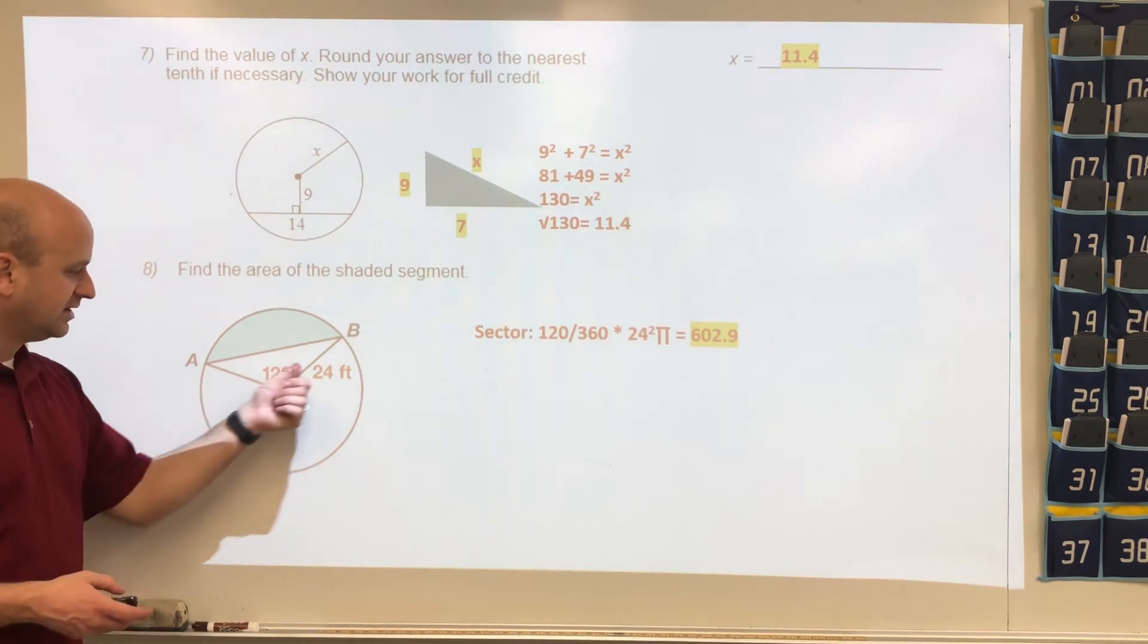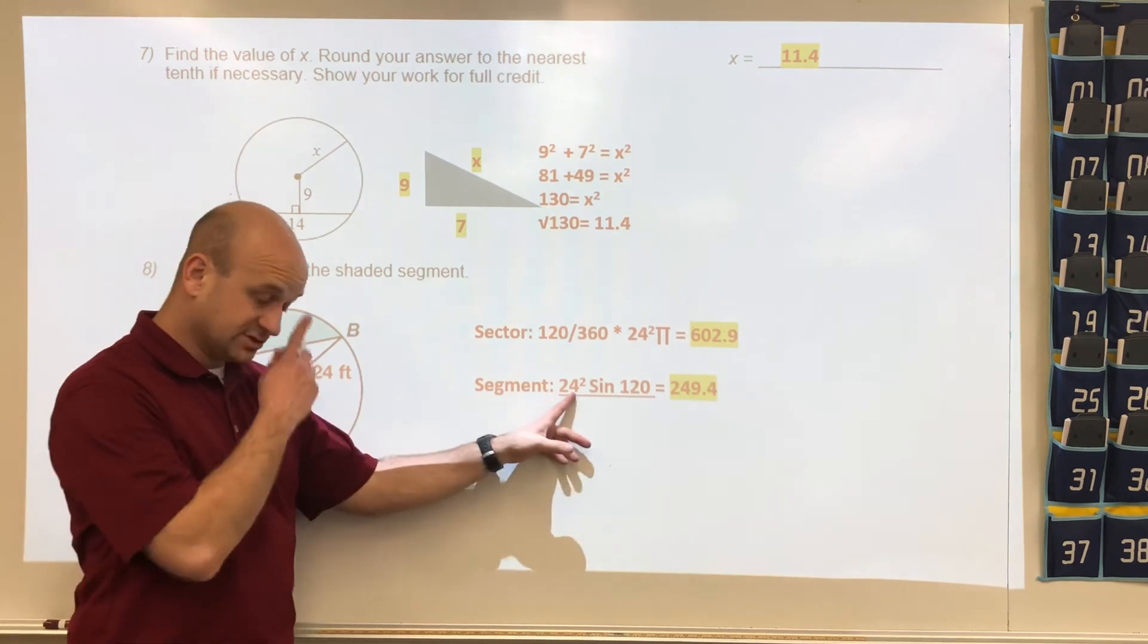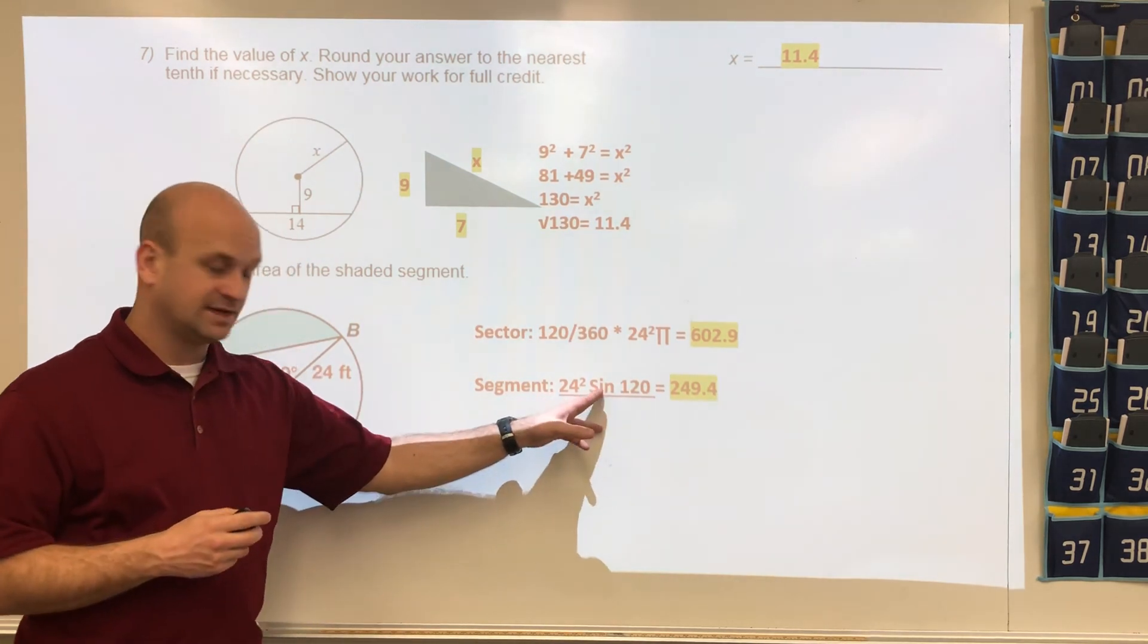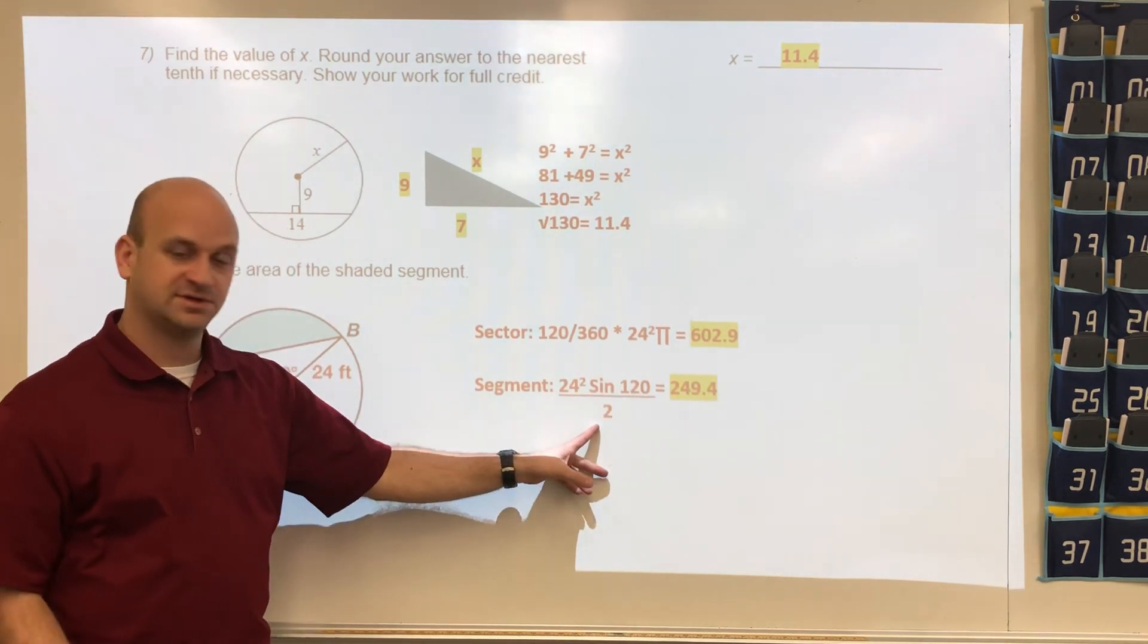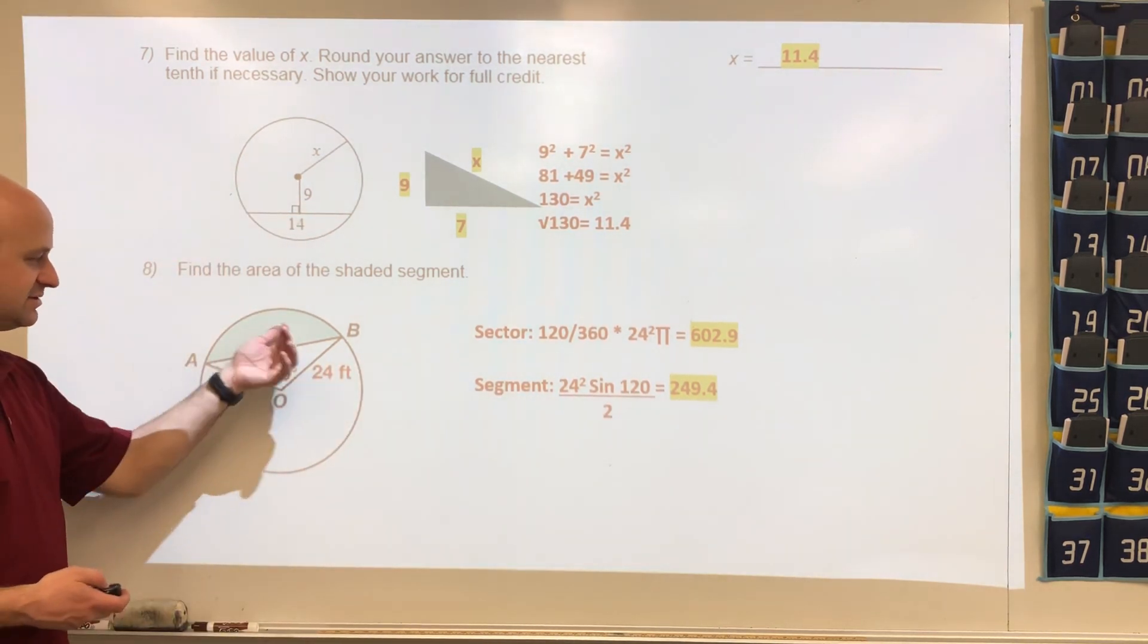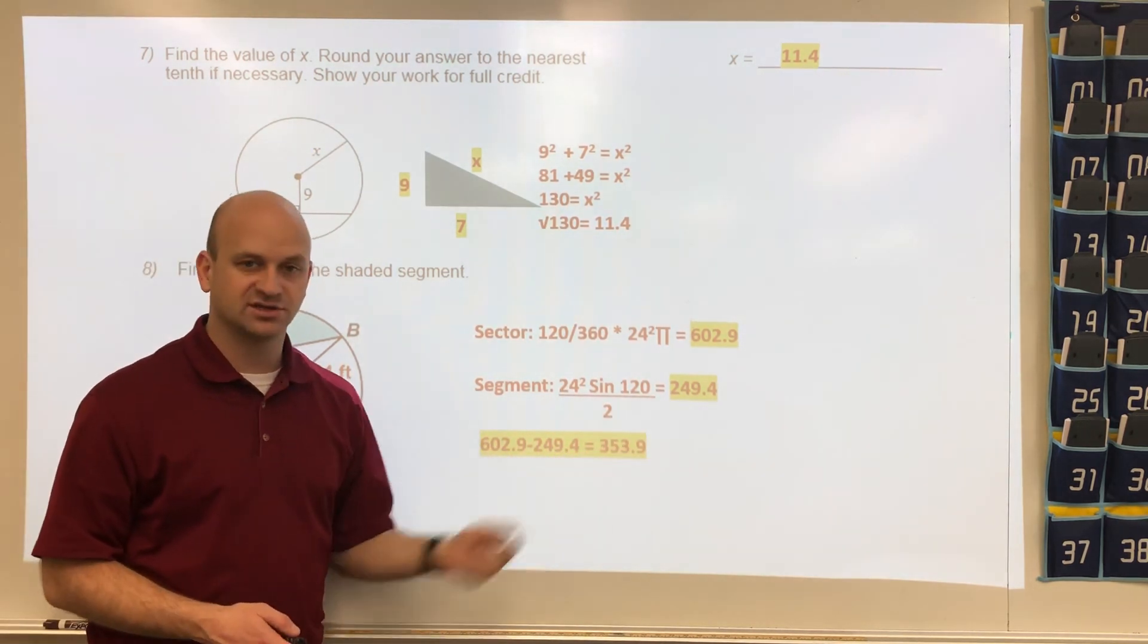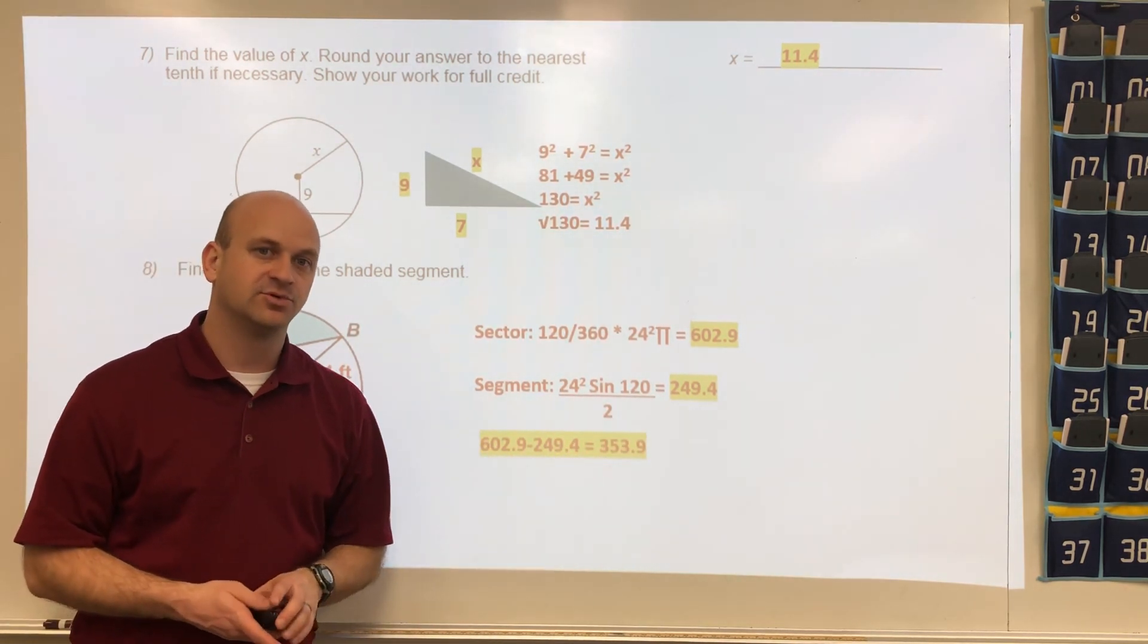That's the first part, that's not the final answer. Now we have to take the area of just the triangle. What we do for the area of the triangle is we're going to go radius squared times sine of 120 divided by 2. When we do that, we should get 249.4. Then the last thing is to find the segment, we're going to subtract these two values and we should get 353.9.